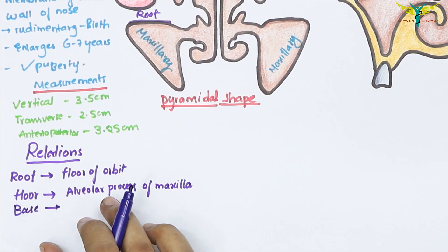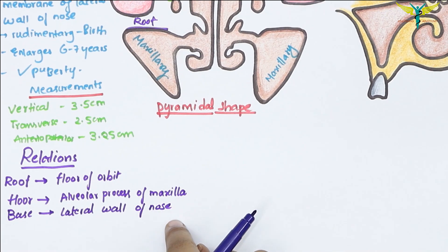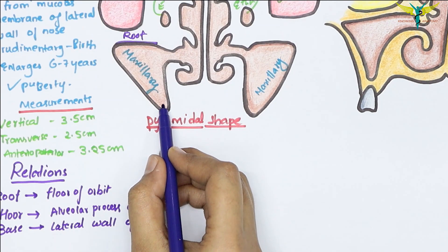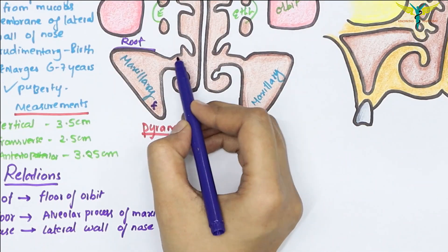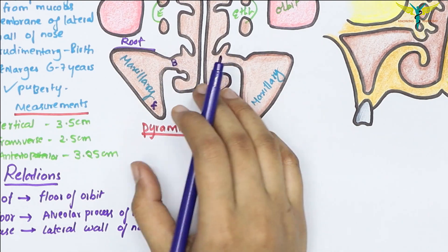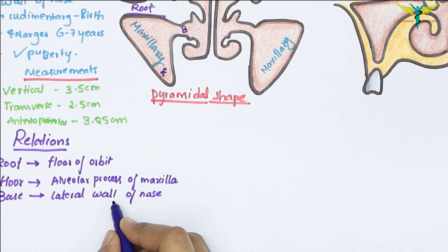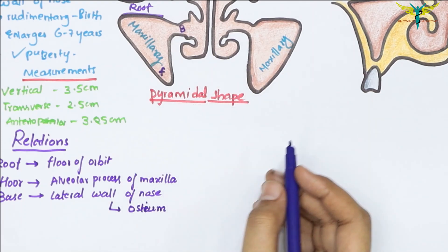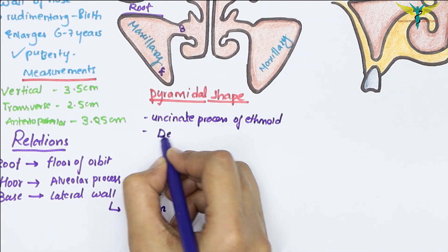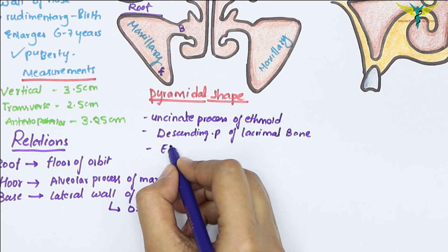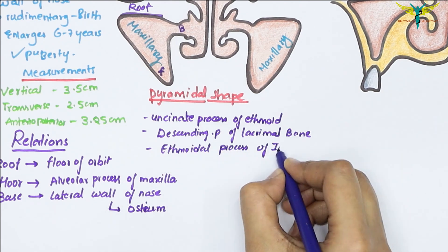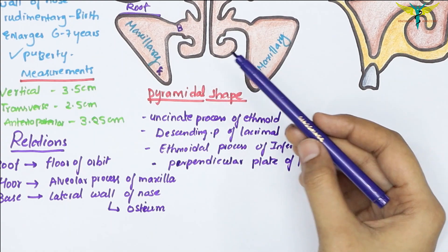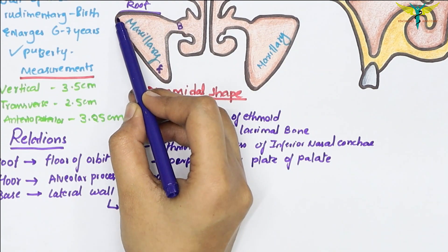The base is formed by the lateral wall of the nose and has an opening or ostium of the sinus in its upper part, very close to the roof. This forms a disadvantageous position for natural drainage. The hiatus of this maxillary sinus is reduced by the uncinate process of the ethmoid bone, the descending process of the lacrimal bone from the front, the ethmoidal process of the inferior nasal concha, and the perpendicular plate of the palatine bone from behind. These bones reduce the size of the maxillary hiatus in a disarticulated skull.